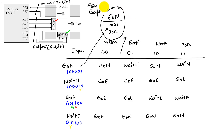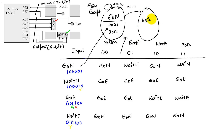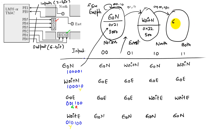On an input of 00 or 10, we remain in go north. On an input of 01 or 11, we transition to a new state: wait north. The output produced in wait north is 0x22, and the dwell time there is 500 milliseconds — half a second. No matter what input we get (00, 01, 10, or 11) from wait north, all inputs take us to the same next state: go east.